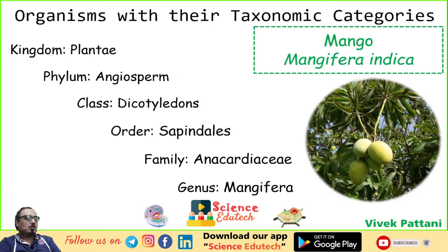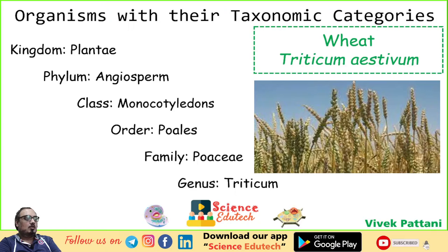Next, mango. Phylum: Angiosperms. Class: Dicotyledones. Order: Sapindales. Family: Anacardiaceae. Genus: Mangifera. Scientific name: Mangifera indica. Next, wheat. Class: Monocotyledones. Order: Poales. Family: Poaceae. Genus: Triticum. Scientific name for wheat: Triticum aestivum.